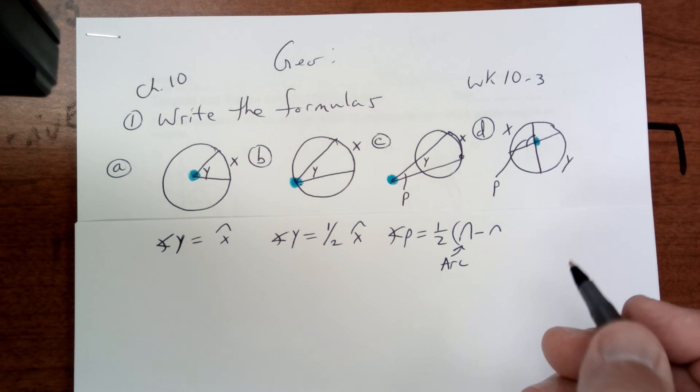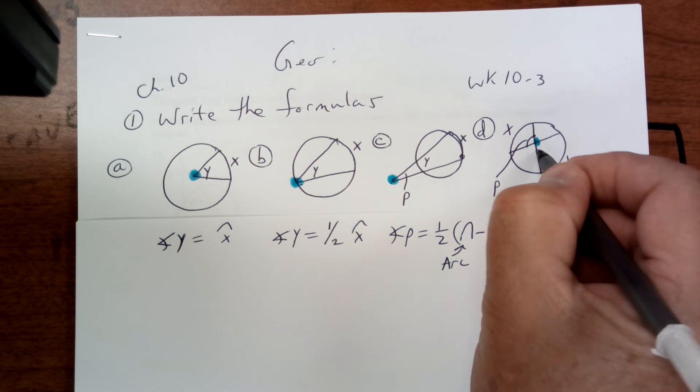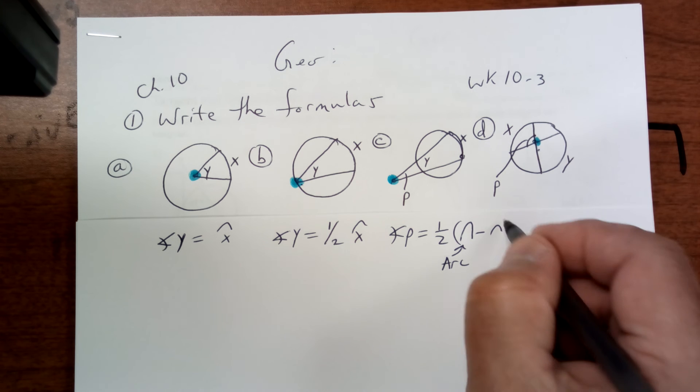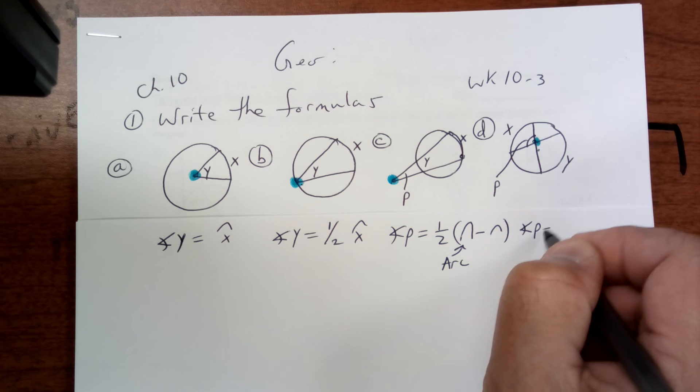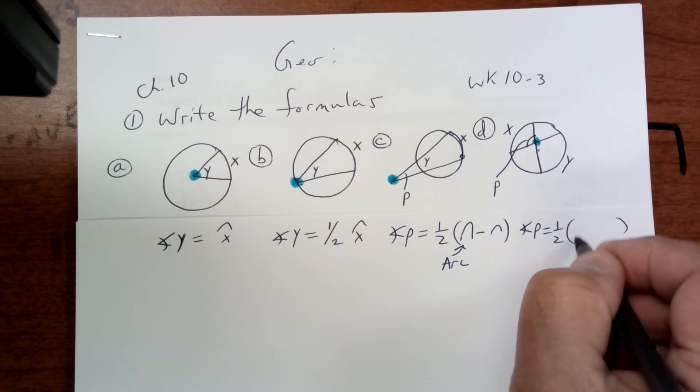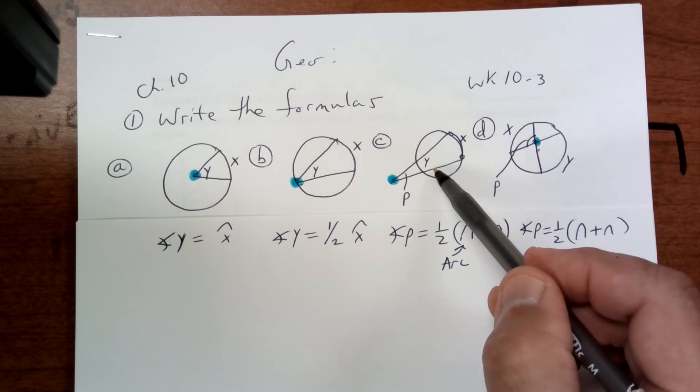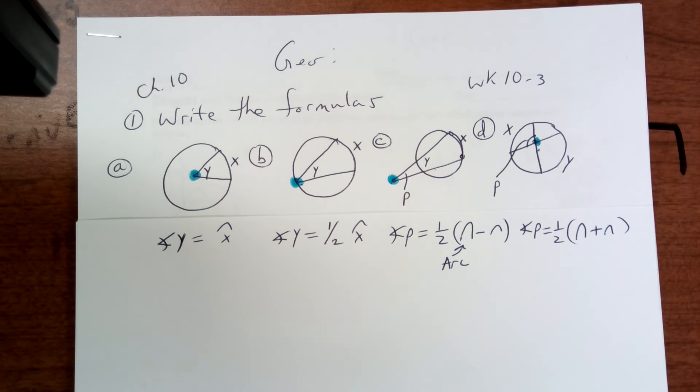This one right here is not the center of the circle, but it's inside the circle. So angle P is equal to half of the sum of the two arcs. So this one, you add them. This one, you subtract them. And those are the four formulas so far.